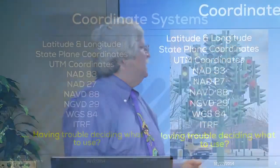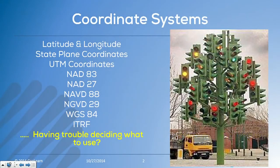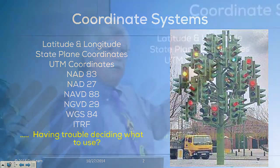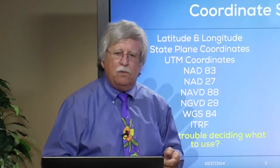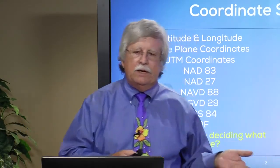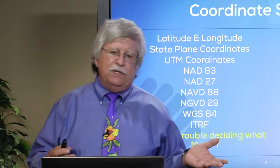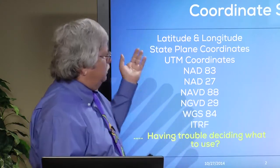One of the things that becomes so confusing — and I've heard this multiple times in my career, almost 40 years with the National Geodetic Survey — is users not truly understanding the information that they have. They may understand that they have latitude and longitude, or even state plane or UTM coordinates, but not understanding the datum: is it NAD 83 or NAD 27, NAVD 88 or NGVD 29, WGS 84, ITRF, etc.